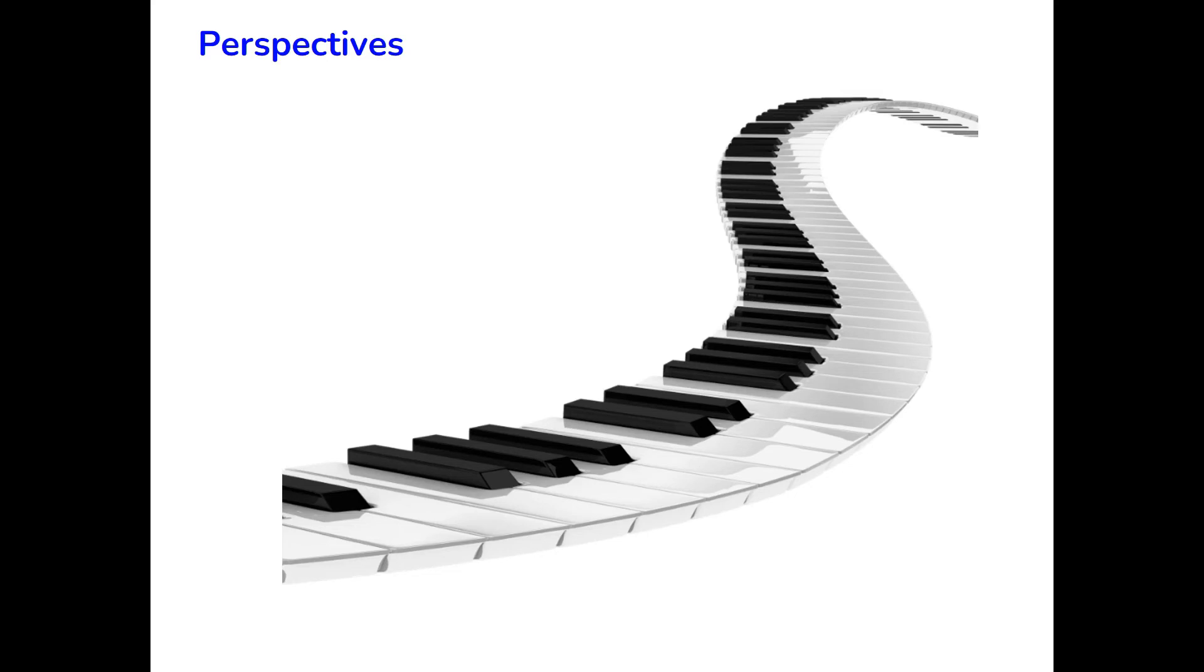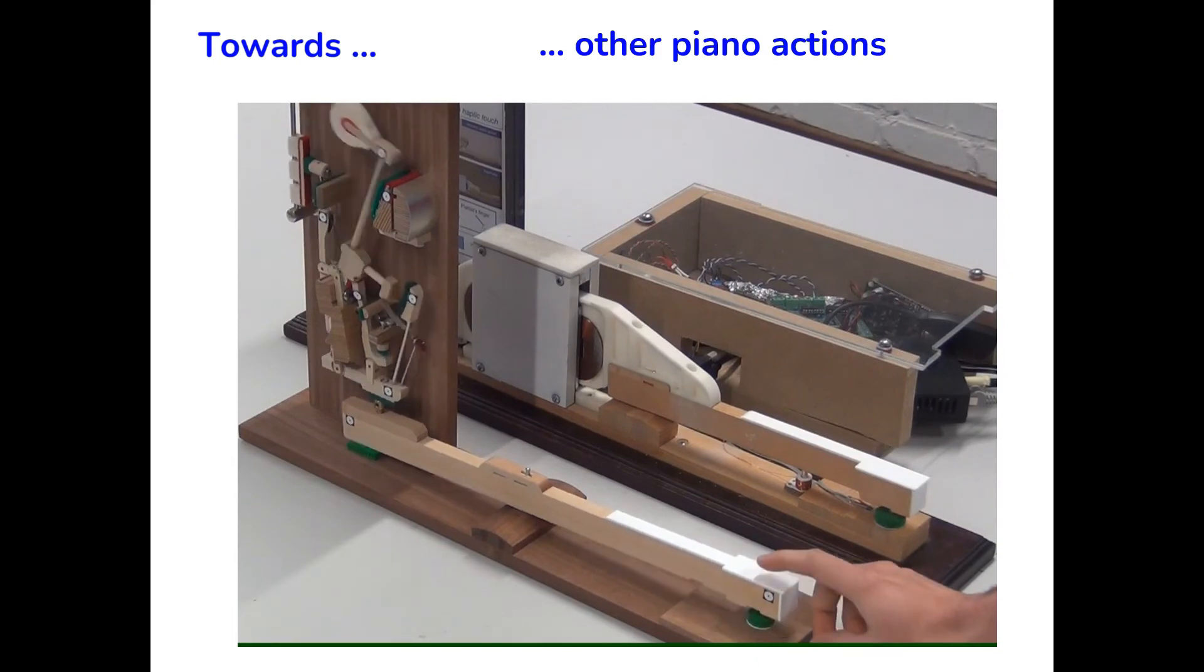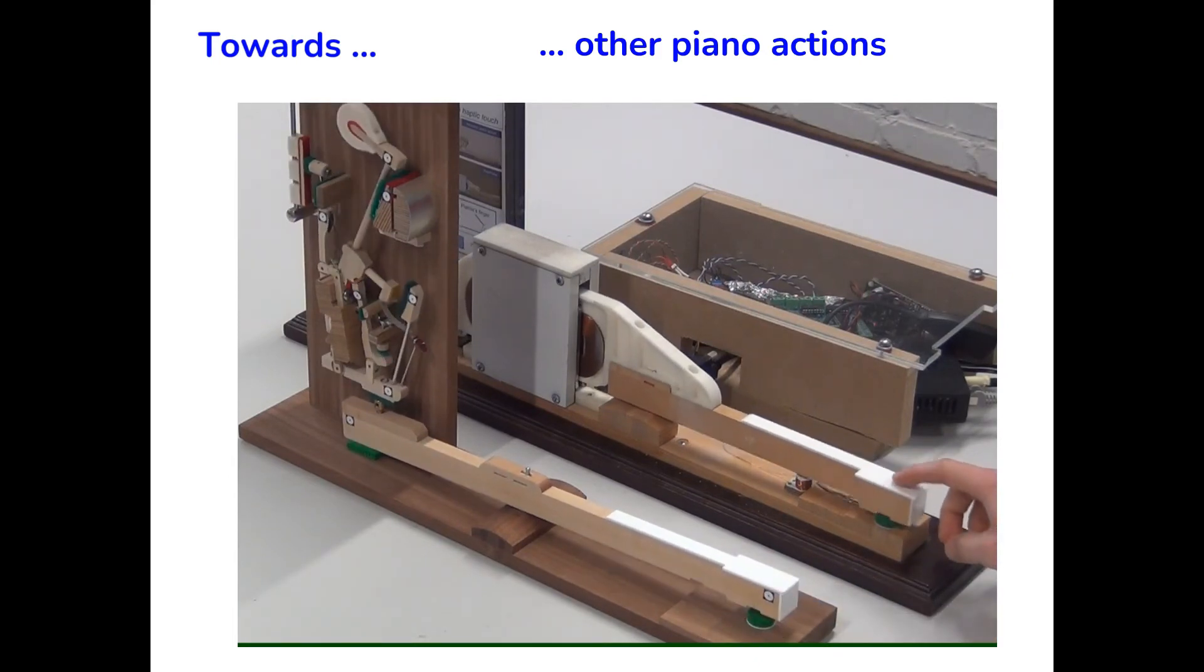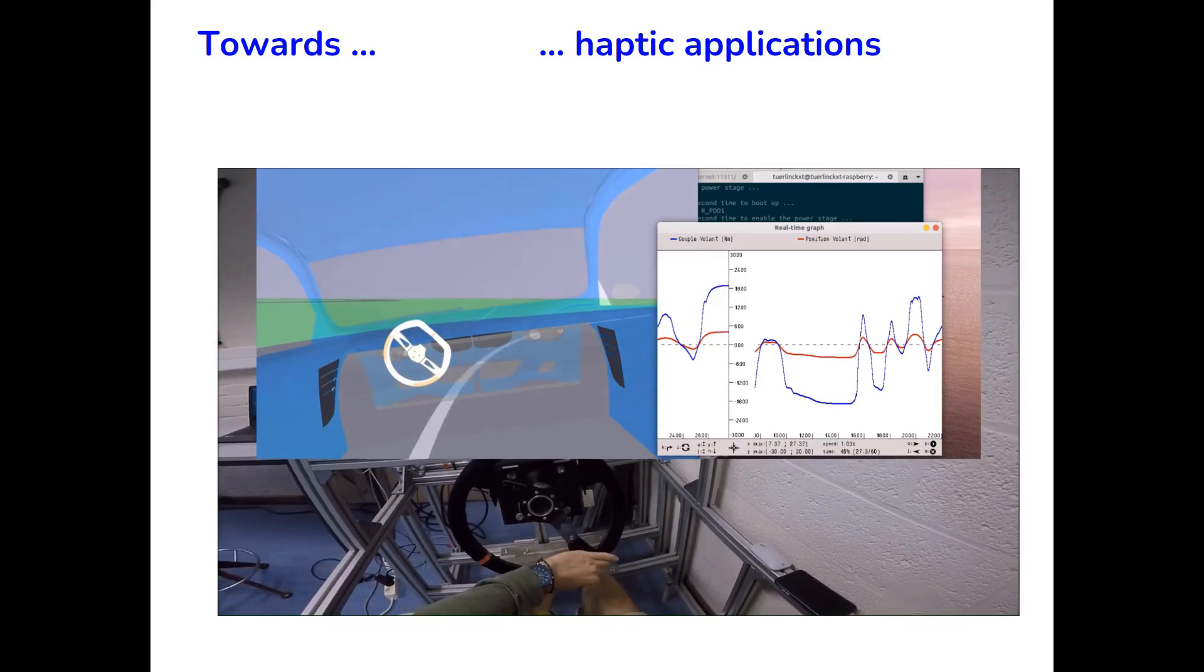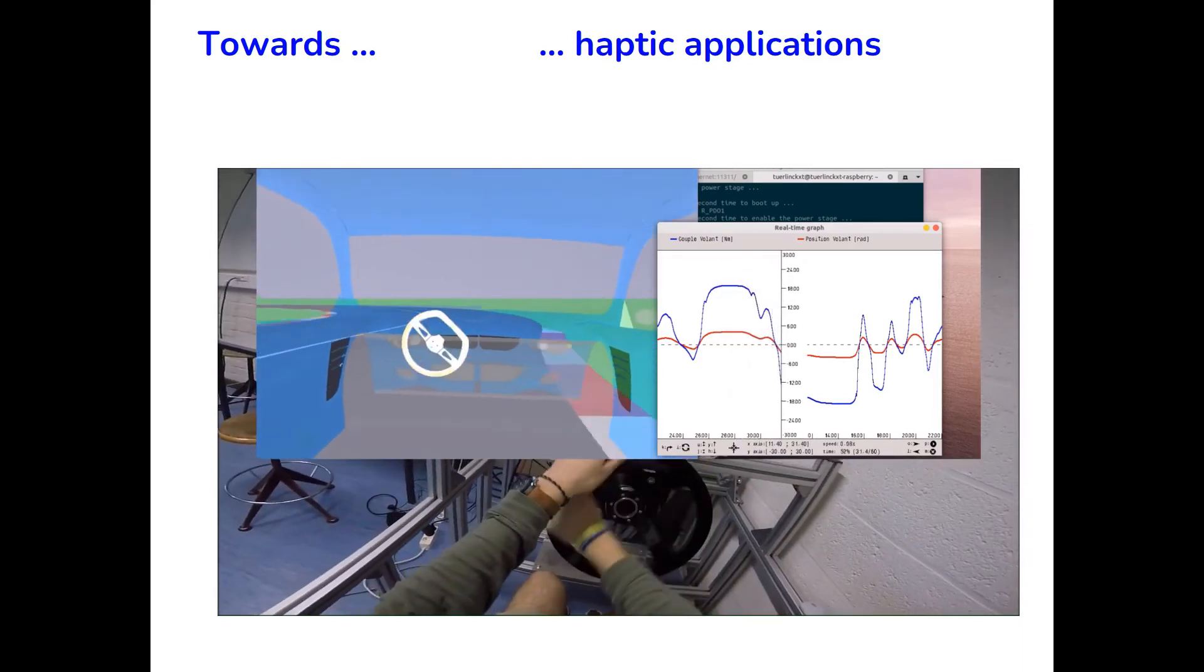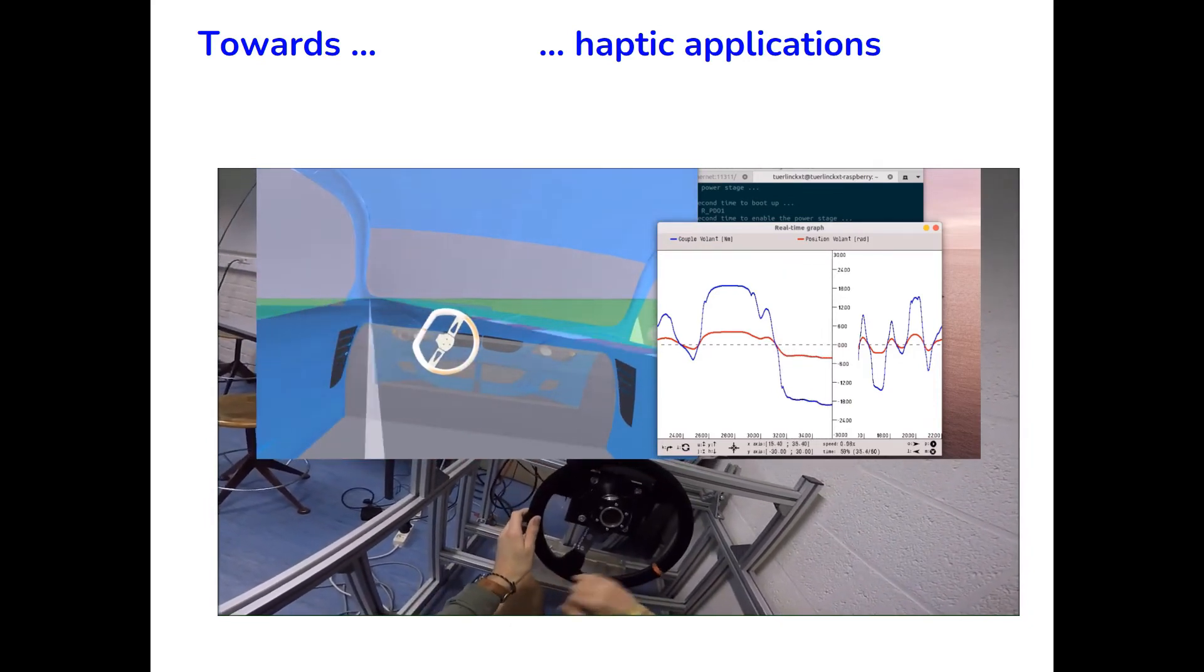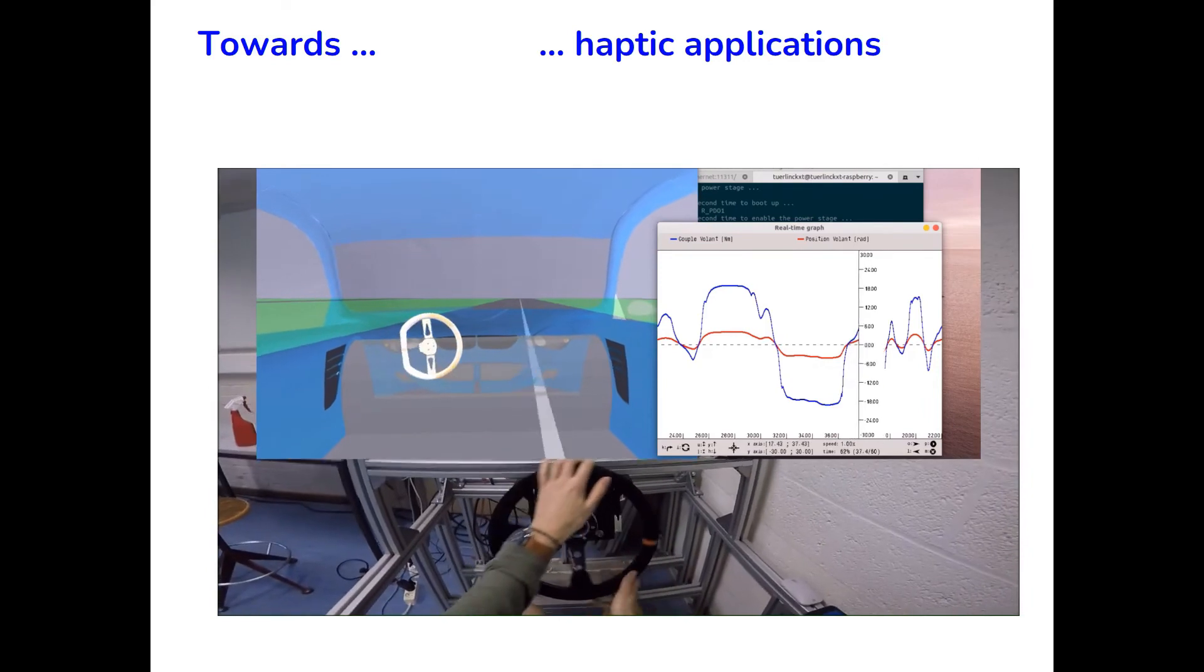One could think of a lot of perspectives for our work. For example, we could aim toward other piano actions, for example here the upright piano action included in our one-key demonstrator. Or we could apply the same haptic approach to other applications, for example here for a haptic steering wheel with a multibody model of a car to reproduce the torque on the steering wheel.